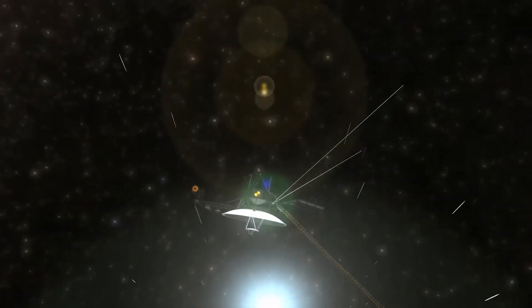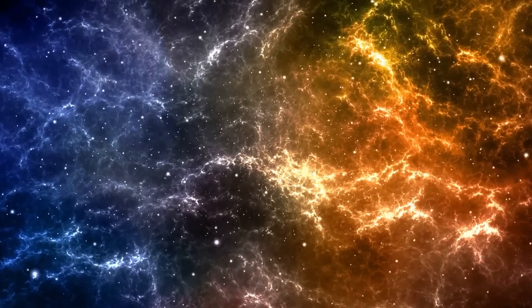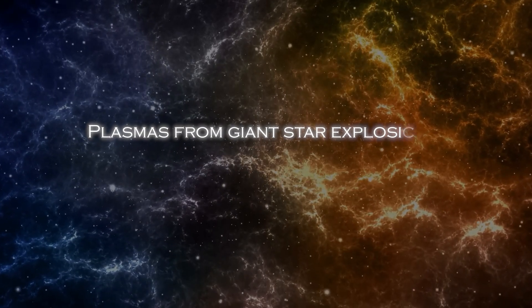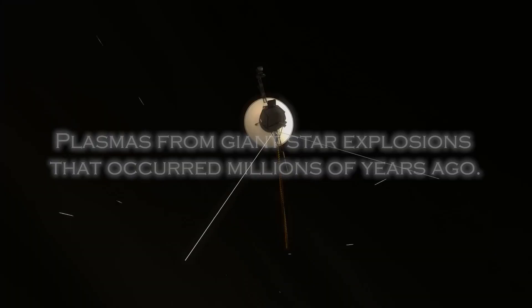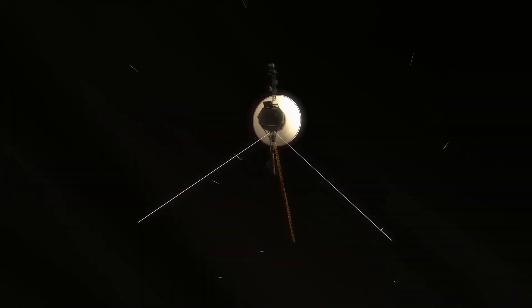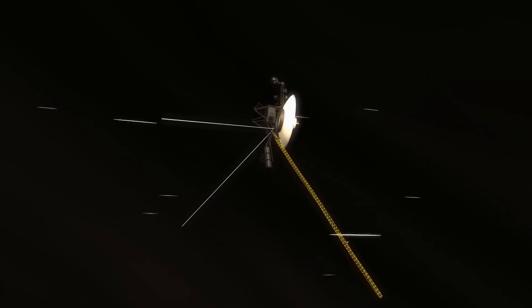Now, Voyager 1 has detected the presence of 300 unknown objects passing through space. This discovery has completely changed our understanding, as these objects have been found to be plasmas from giant star explosions that occurred millions of years ago. Join us on this journey through the cosmos to find out what these objects discovered by Voyager 1 are all about.